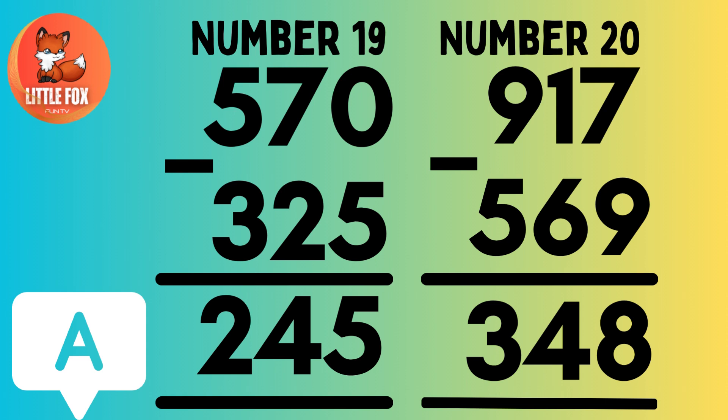Number 20. 917 minus 569 is equals to 348.